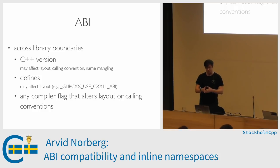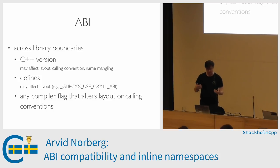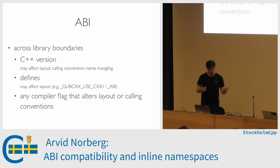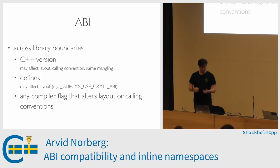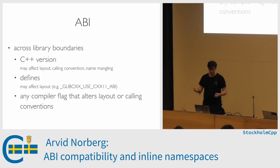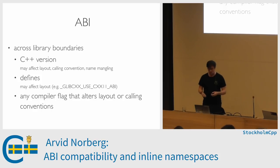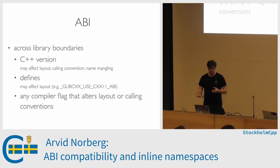The main problem you'll encounter is at library boundaries — between an application and a library. Common causes include the C++ version: if you compile a library with one version of C++ and then compile your client with a different version, you risk running into ABI compatibility issues. It can be more subtle than that — just having a define in one translation unit and not in the other can also cause issues. For instance, _GLIBCXX_USE_CXX11_ABI is the define that enables the small string optimization in libstdc++. If you want to use that, you have to make sure that anyone you pass a string to also has that define set. There are also plenty of compiler flags that alter the calling convention or layout of structs.